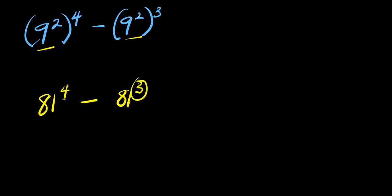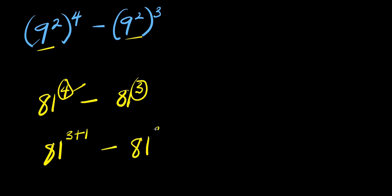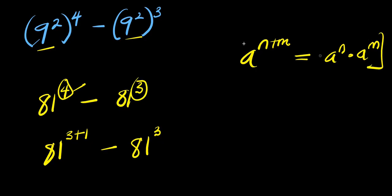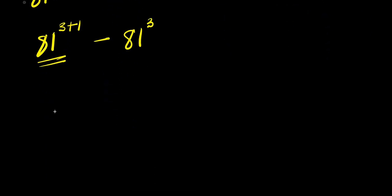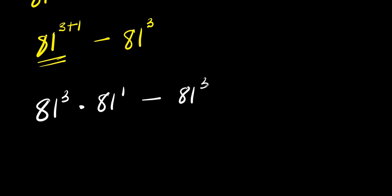So this is 3 and this is 4. I can express this 4 as the summation of 3 and 1. So I have 81 power 3 plus 1 minus 81 power 3. Now if you have a power n plus m, this equals a power n times a power m. I apply this identity right here. So I'm going to have 81 power 3 times 81 power 1 minus 81 power 3.